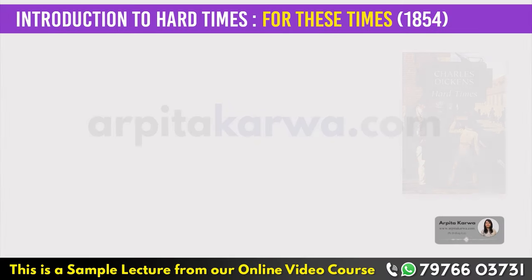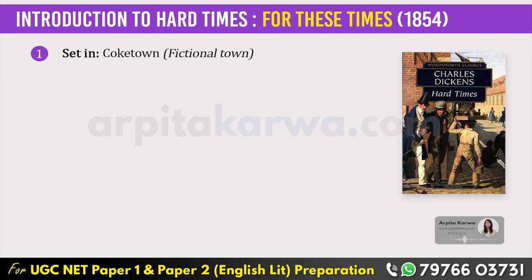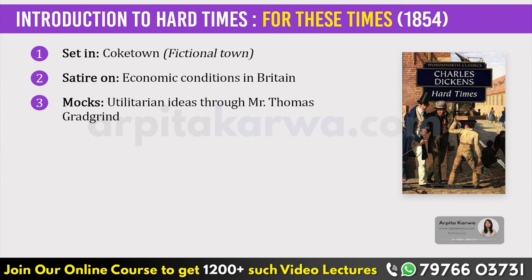Before we start talking about the plot, let me give you a brief background. The story is set in the fictional town of Coketown. The novel is a satire on British economic conditions. Dickens also mocks utilitarian thinking, devoid of emotions, through the portrayal of a character, Mr. Thomas Gradgrind.